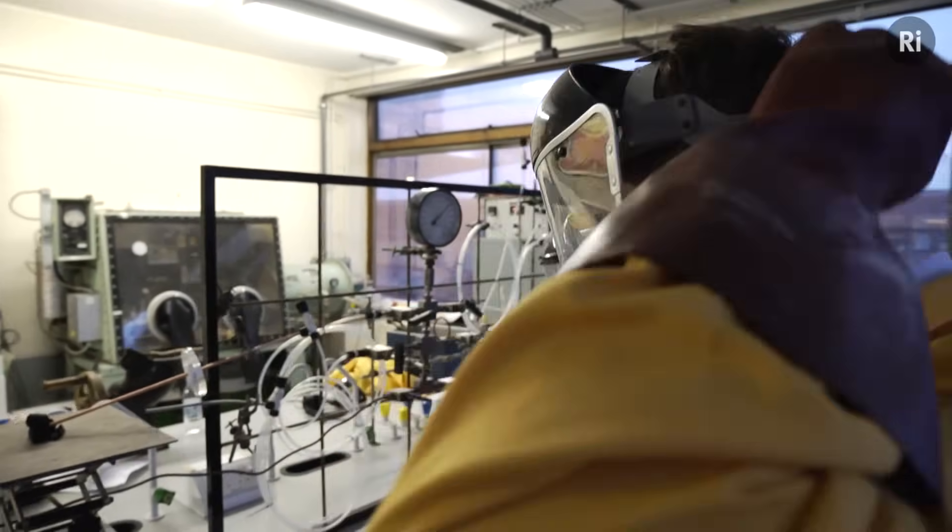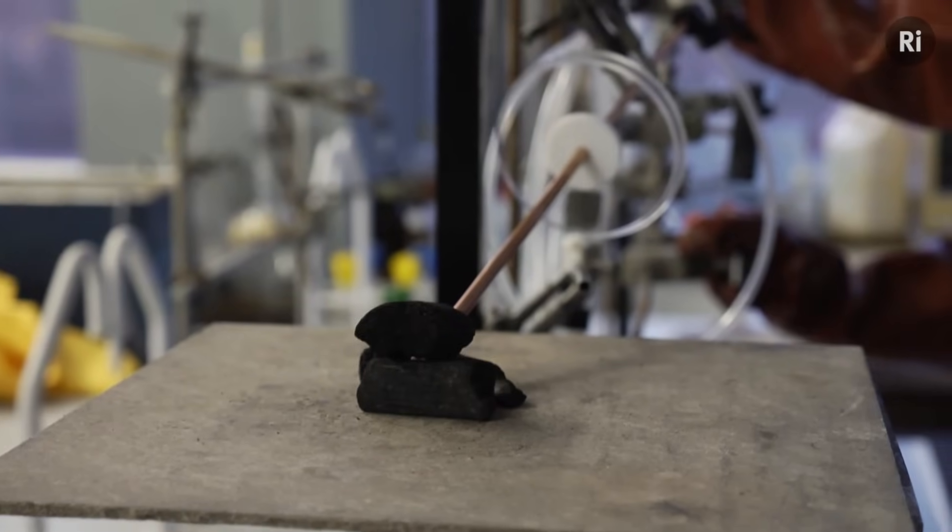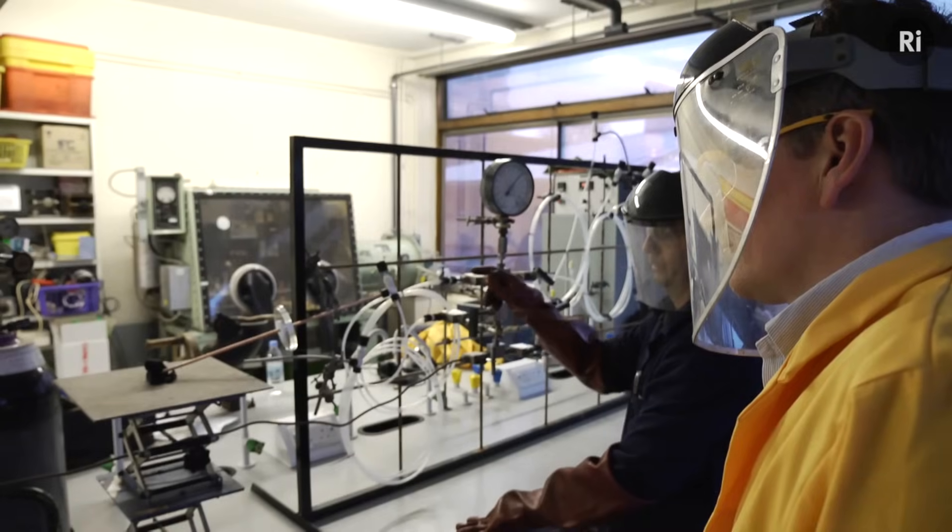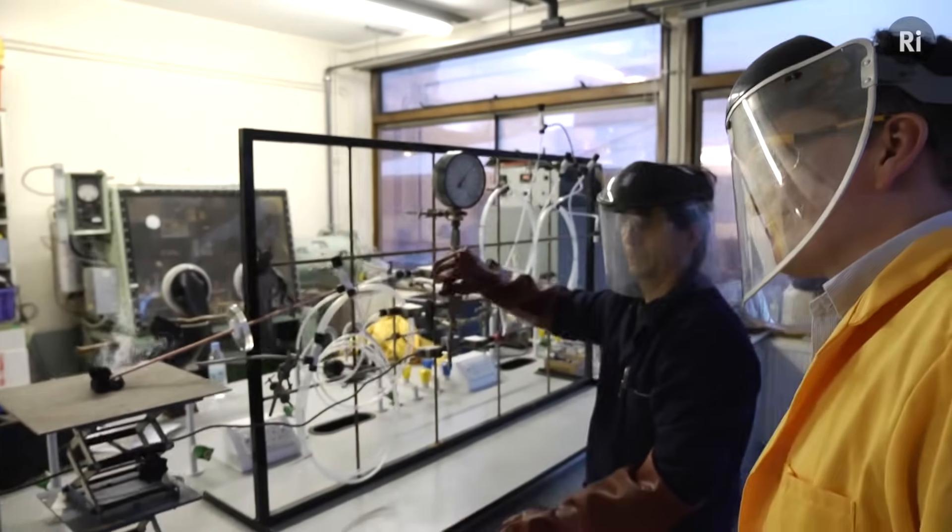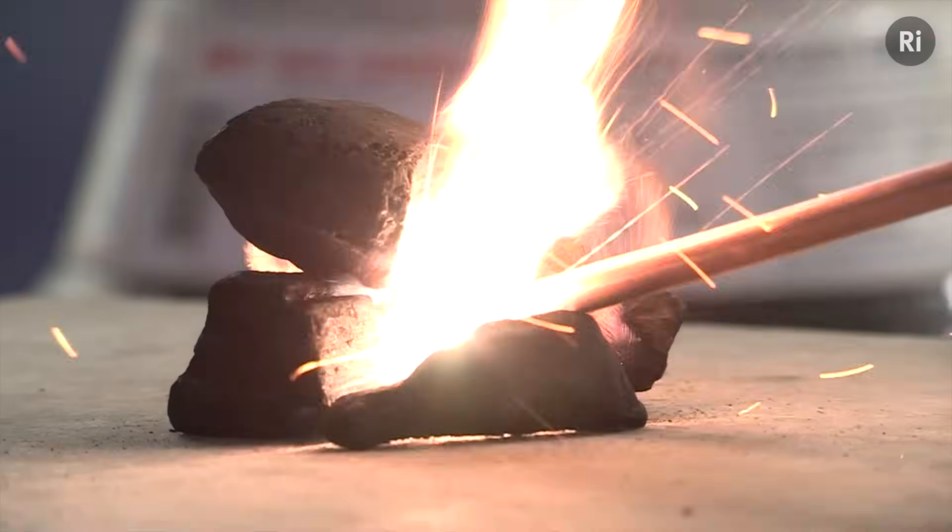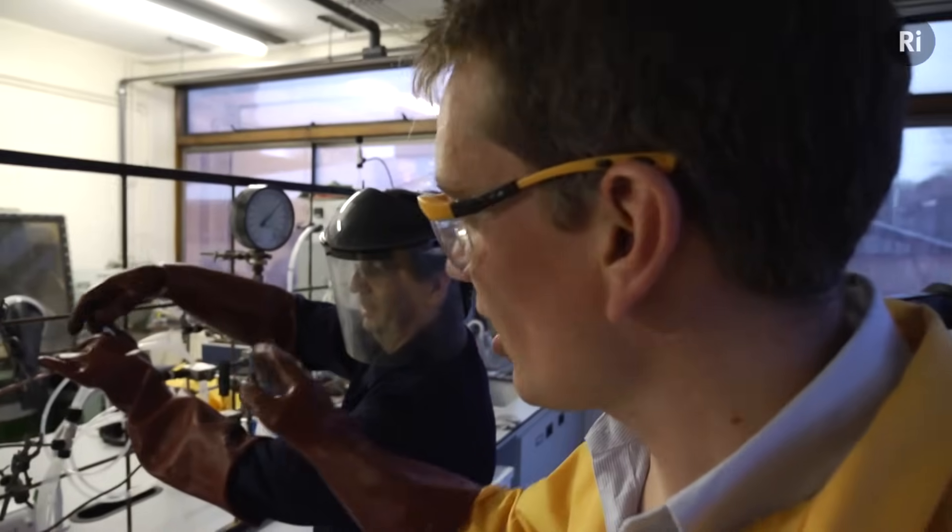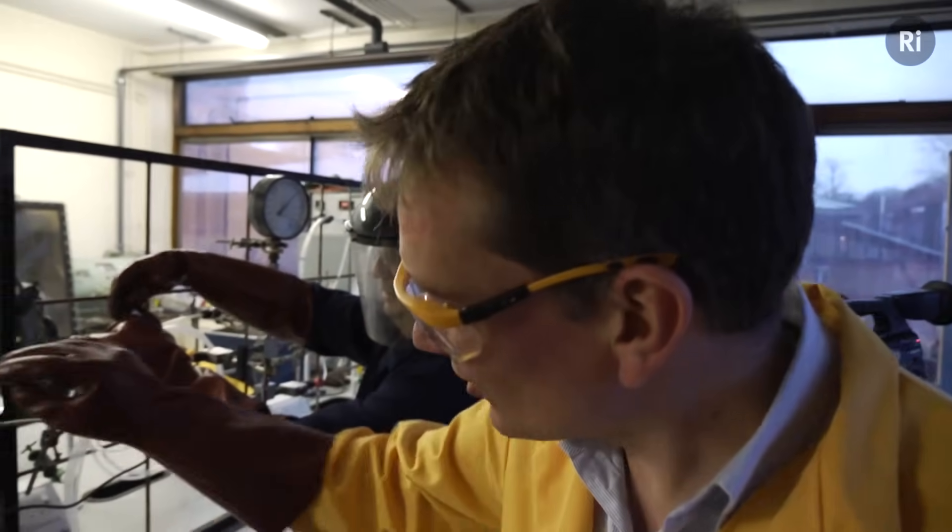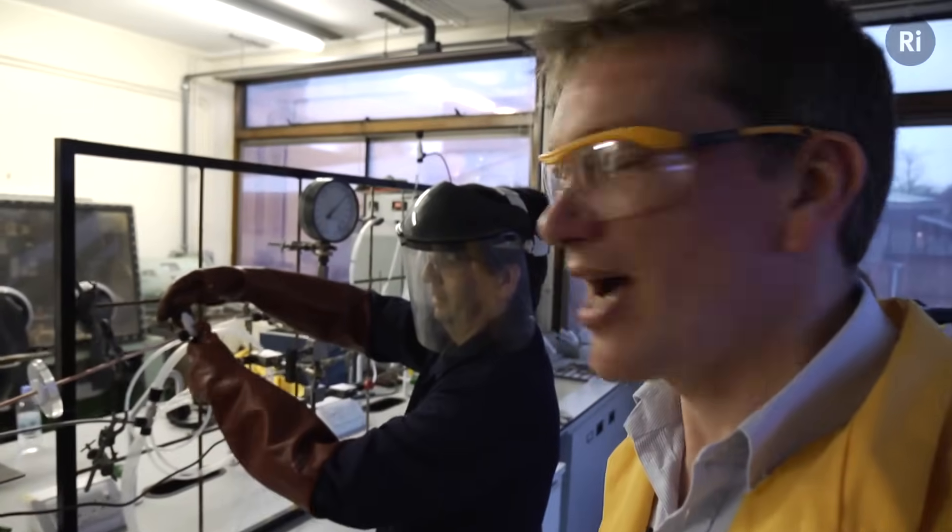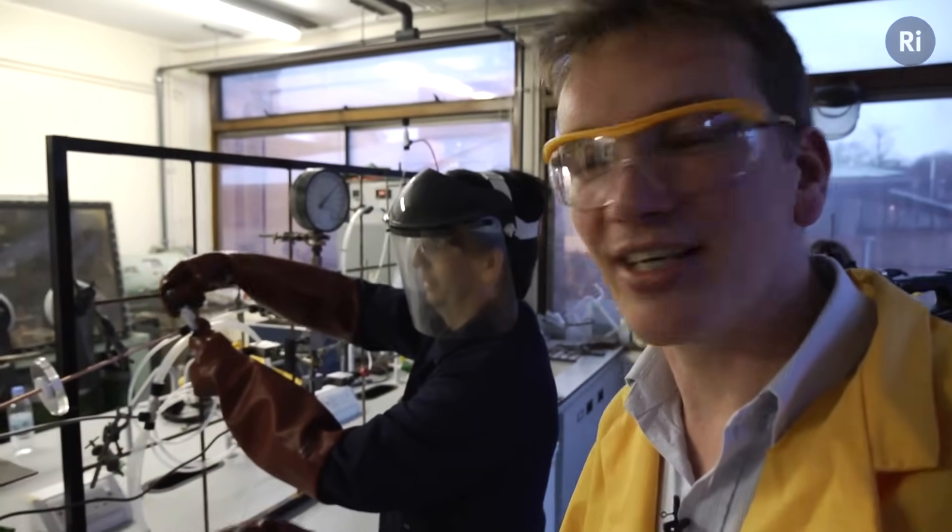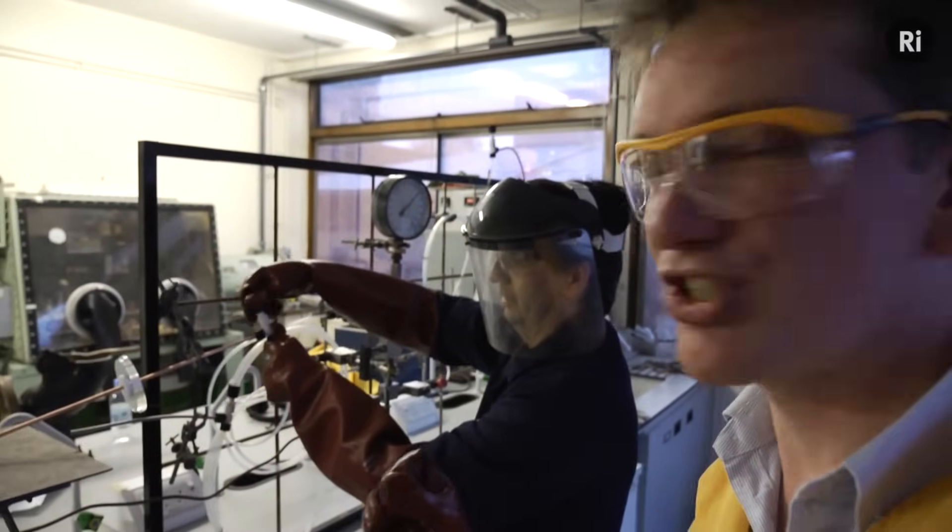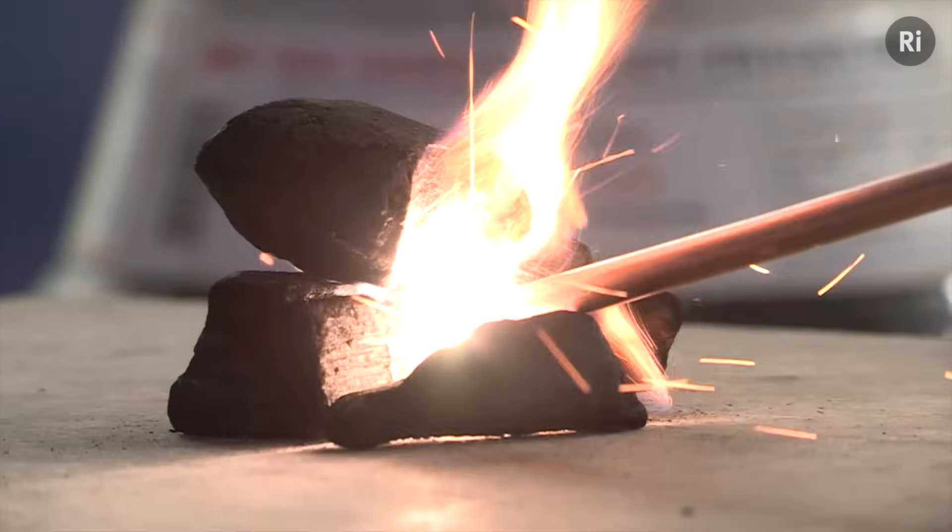Shall we see the reaction then? Let's have a go. Wow. This demonstrates the extreme reactivity of fluorine gas. This was a tiny quantity of fluorine being played onto the surface of the charcoal there. And as soon as the two came into contact, there was this very violent reaction, generated a lot of heat, as you saw the flames there.